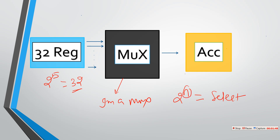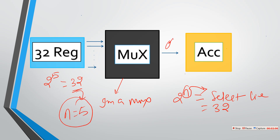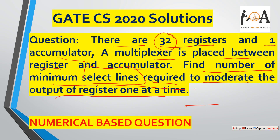Here n is the select lines. The simple formula to calculate select lines is 2 to the power n equals the number of inputs, and we are given 32 registers. So 2 to the power 5 equals 32, which means n equals 5. Therefore we require 5 select lines to get the output from 32 registers, and 5 is the correct answer.